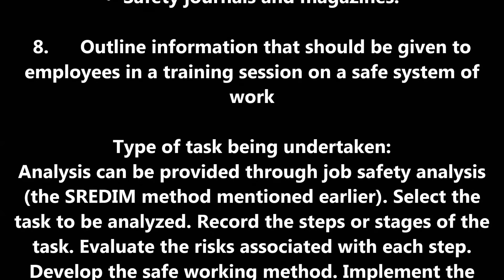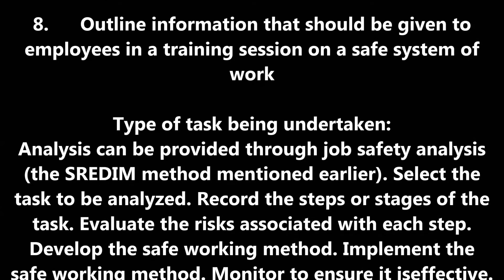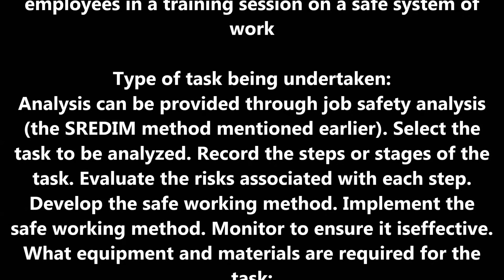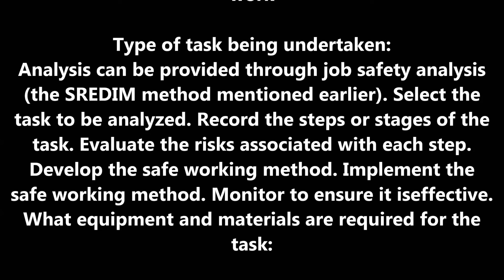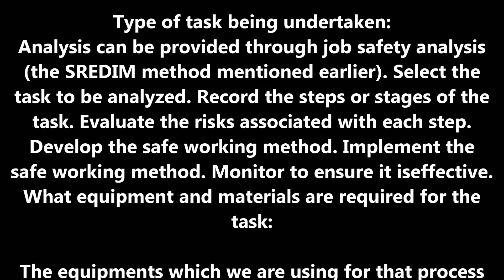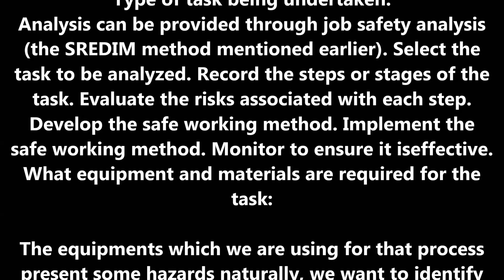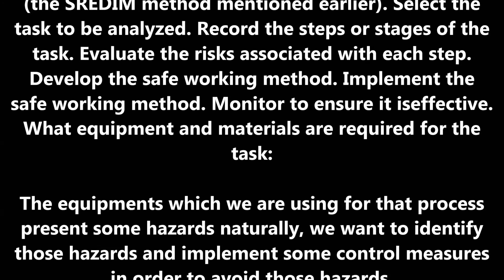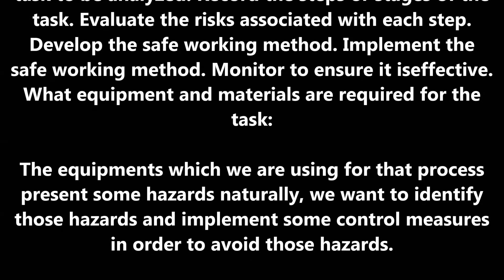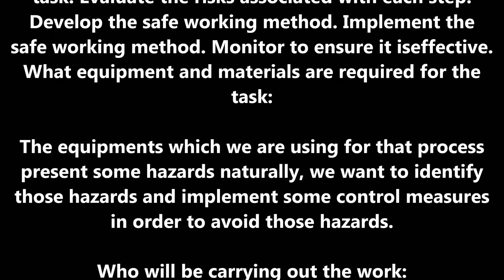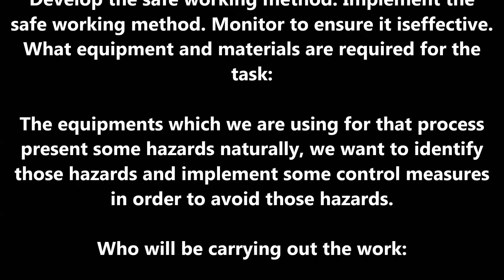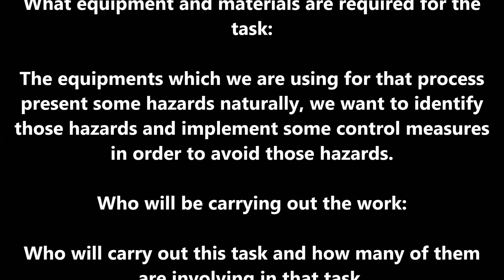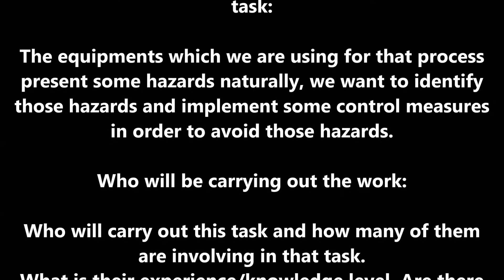External information sources include: national legislation such as regulations; material safety data sheets from manufacturers; national codes of practice and guidance notes; national and international regulatory bodies, for example HSE in the UK or OSHA in Europe; manufacturers' operating instructions; trade associations; and safety journals and magazines.